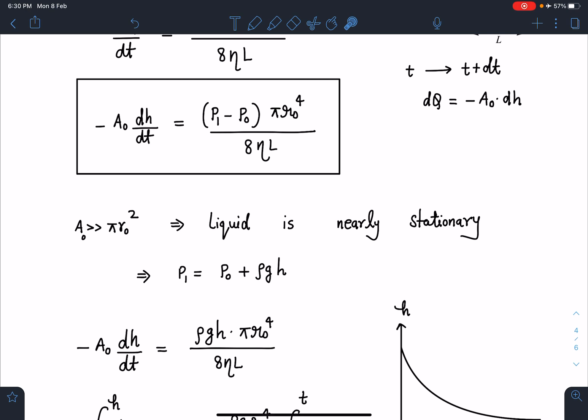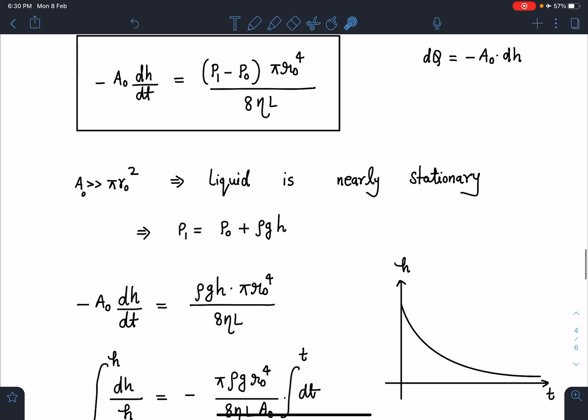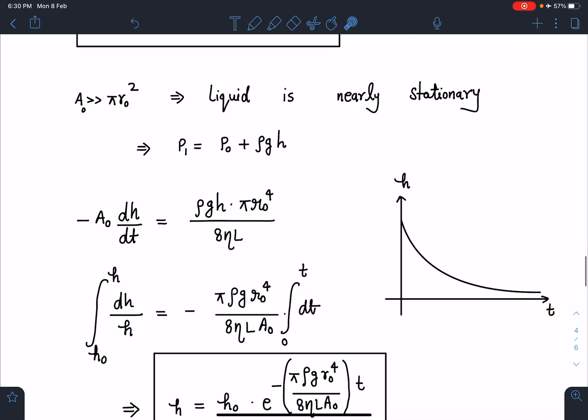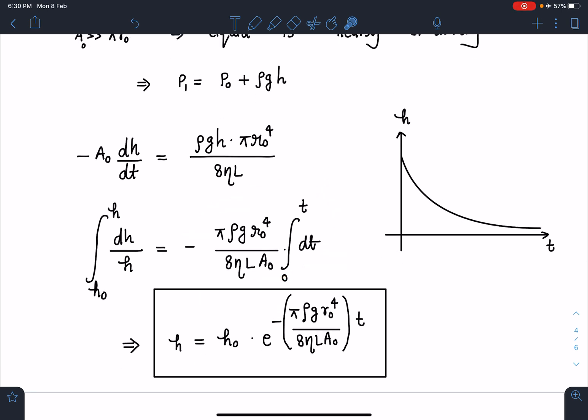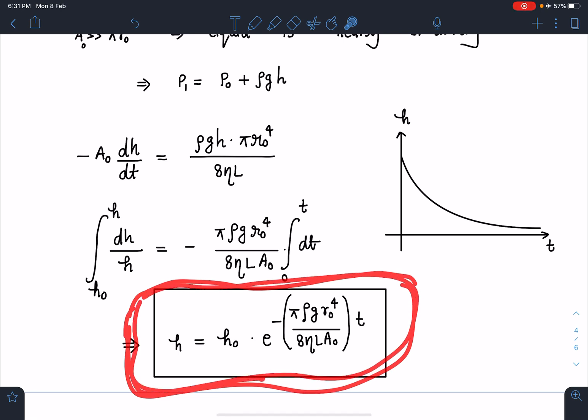If I substitute in this equation here, I am getting -A₀ dh/dt = ρgh × π r₀⁴/(8ηL). Now it's a very simple differential equation, just separate the variables. If I separate the variables here, this kind of terms I am getting: ln(h/h₀).